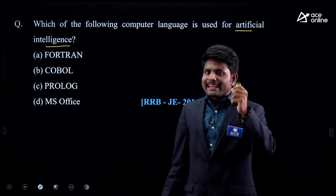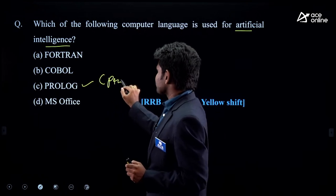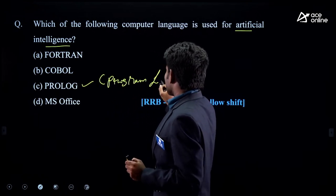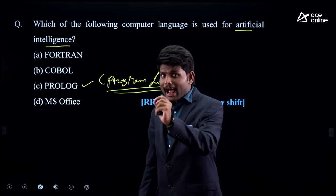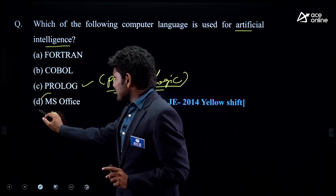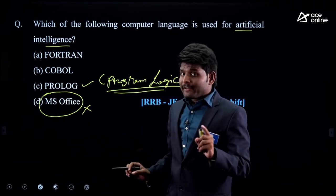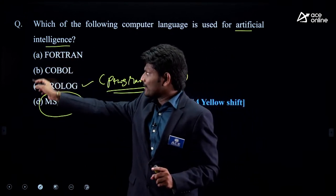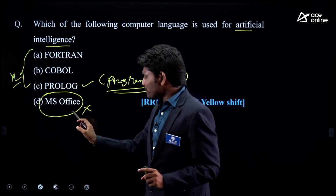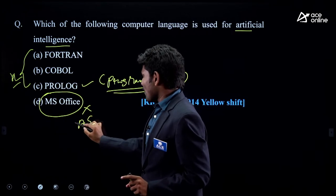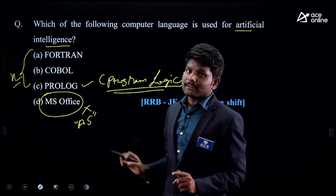While studying about fifth generation computers, you should also recall this point. Prolog — that is, Program Logic — is the programming language used for artificial intelligence. MS Office is not a programming language; it is application software, so it cannot be the answer. Fortran is Formula Translation, used for research purposes. COBOL is Common Business Oriented Language, used for business purposes.